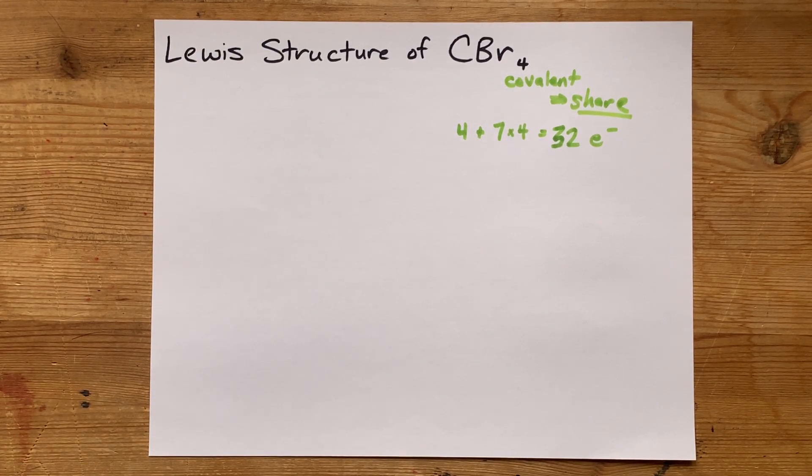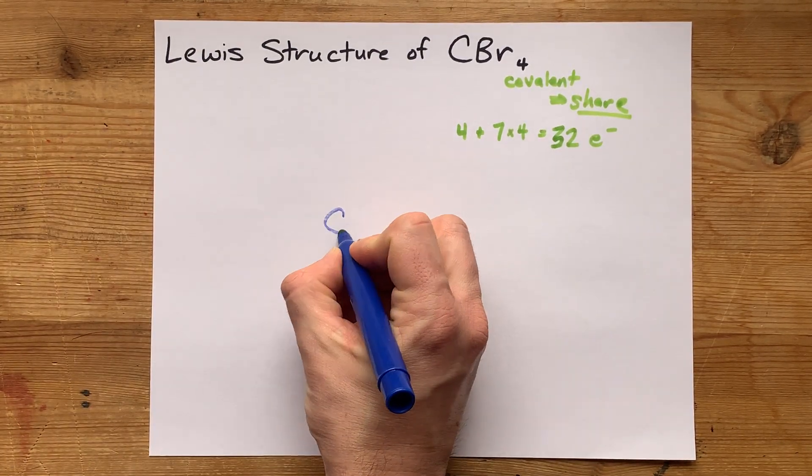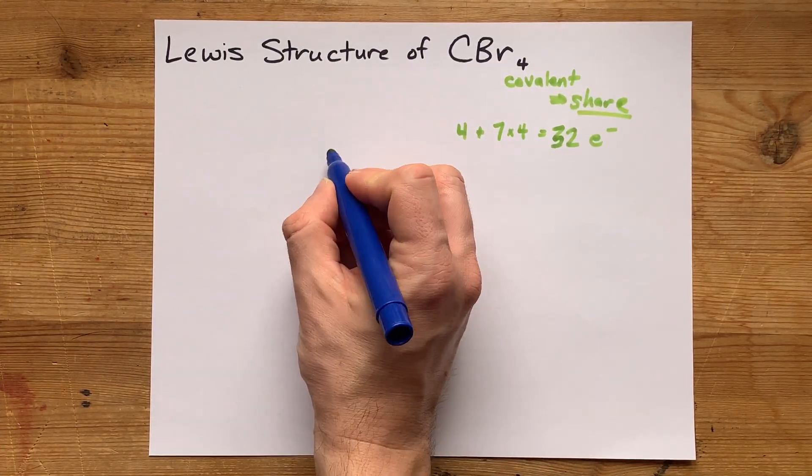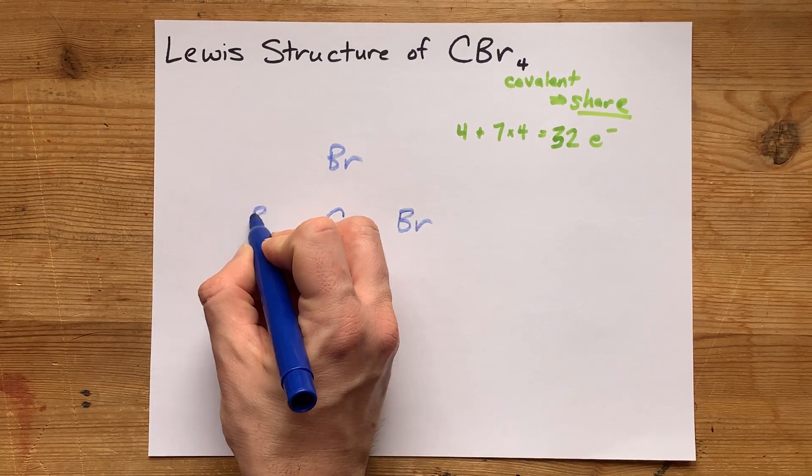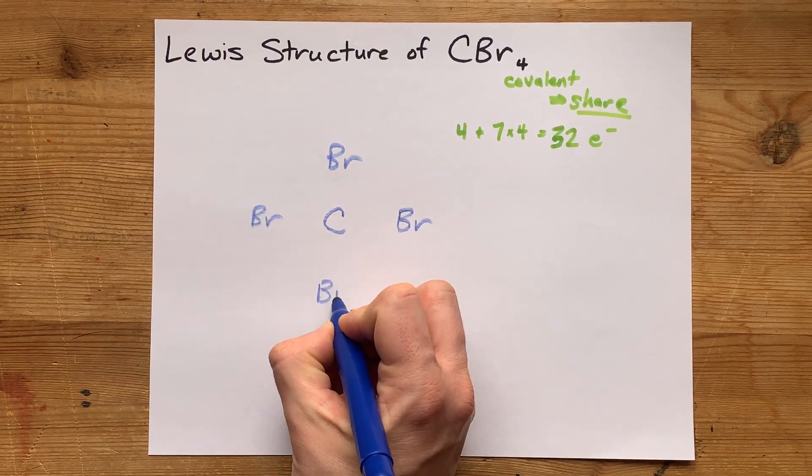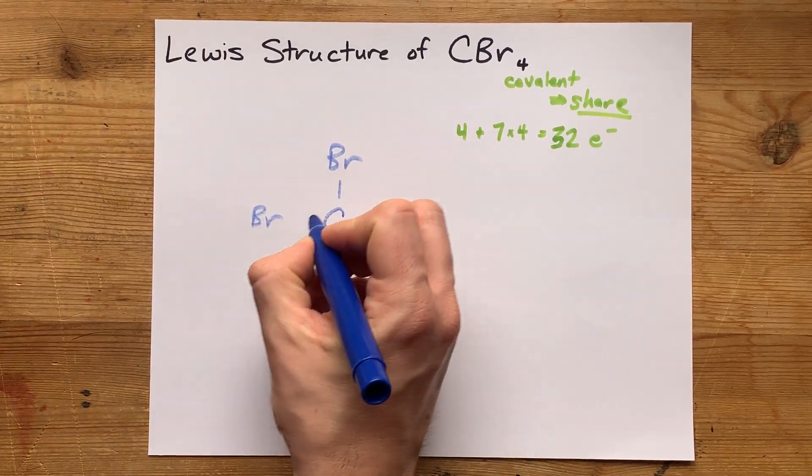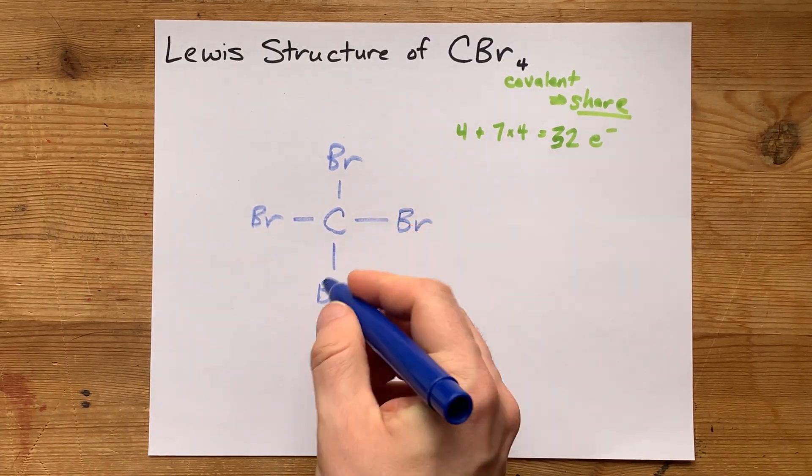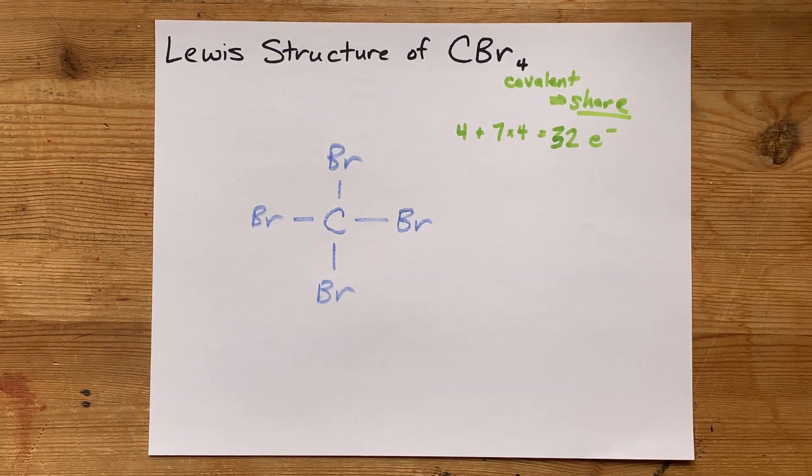Now what I'm going to do is put my central atom in the center, that's carbon, and I'm going to surround it with the other atoms. In this case, Br, Br, a third Br, and a fourth Br. I'm going to single bond, oh, hello cat, I'm going to single bond each of those together to hold it together in a single molecule.